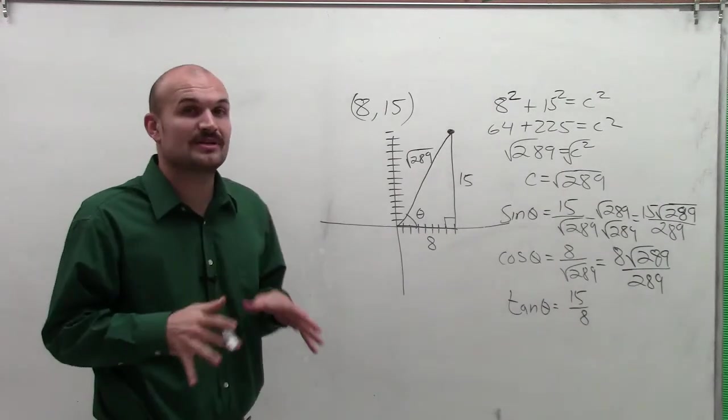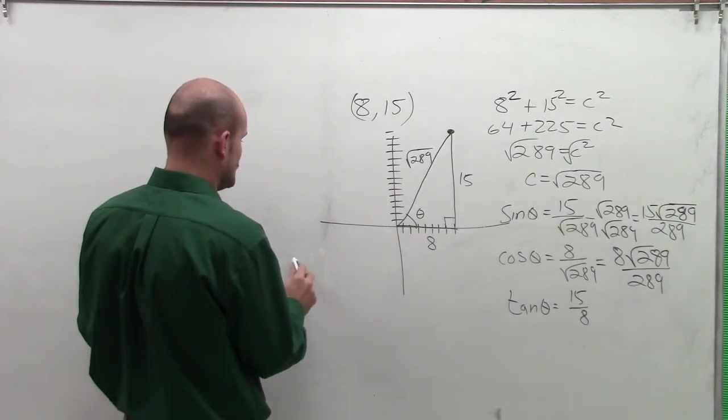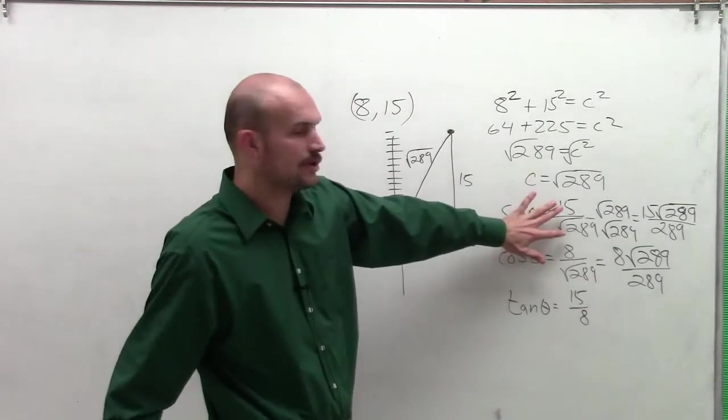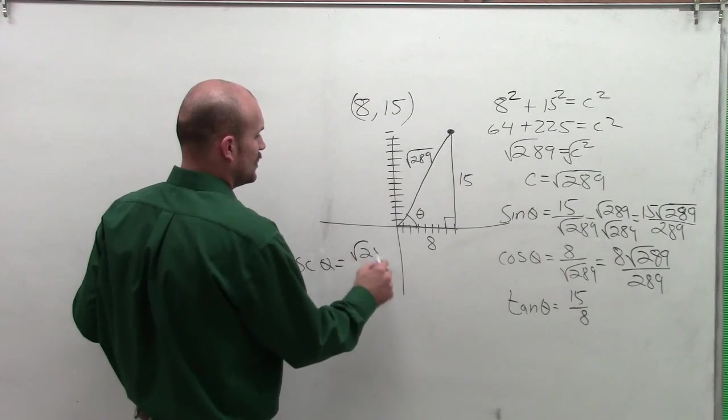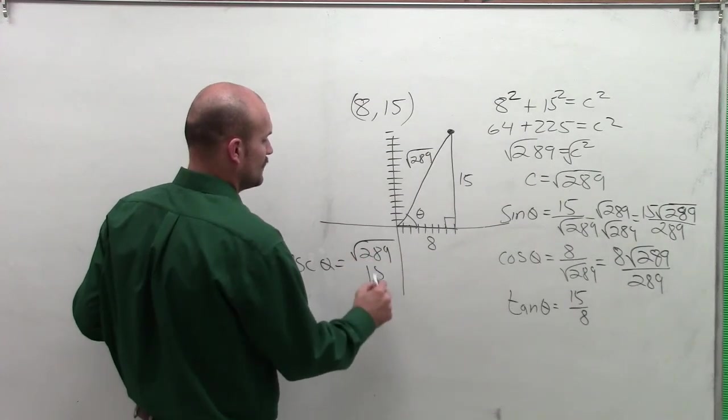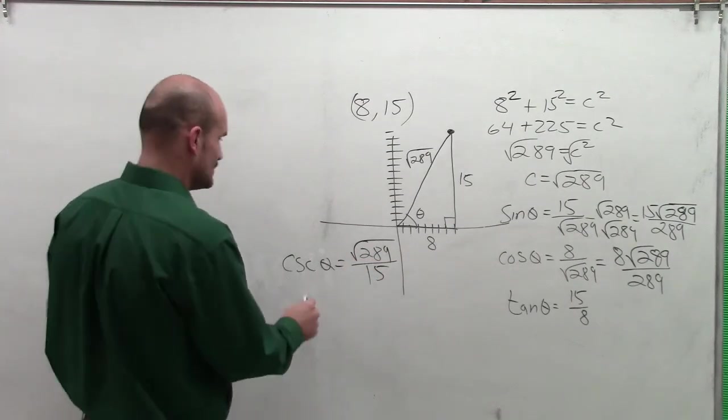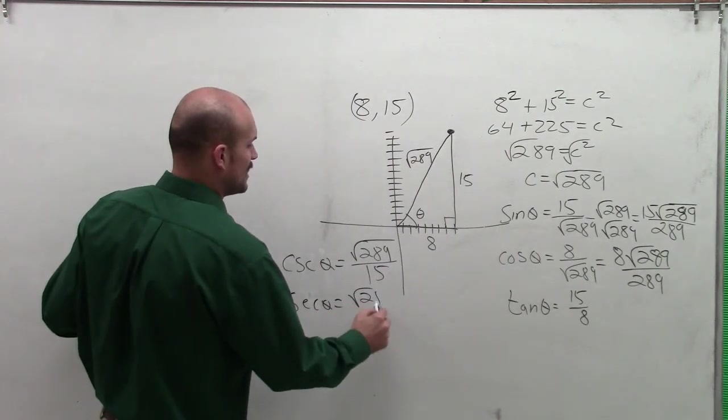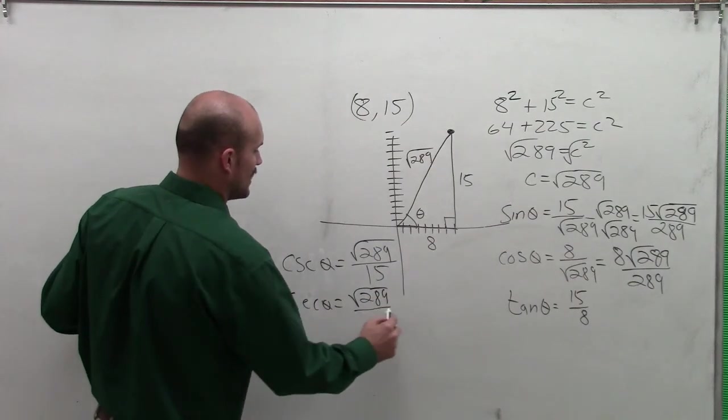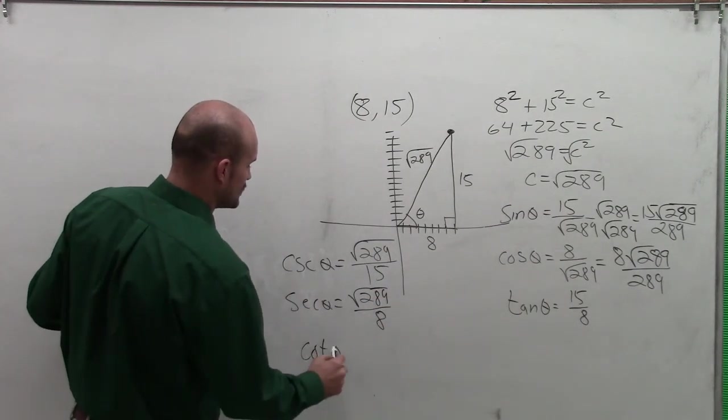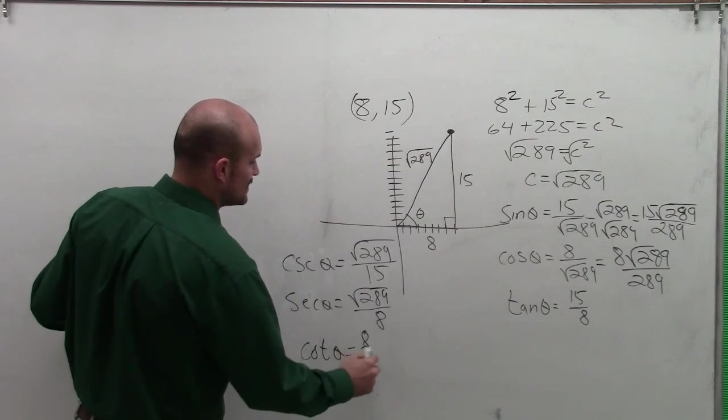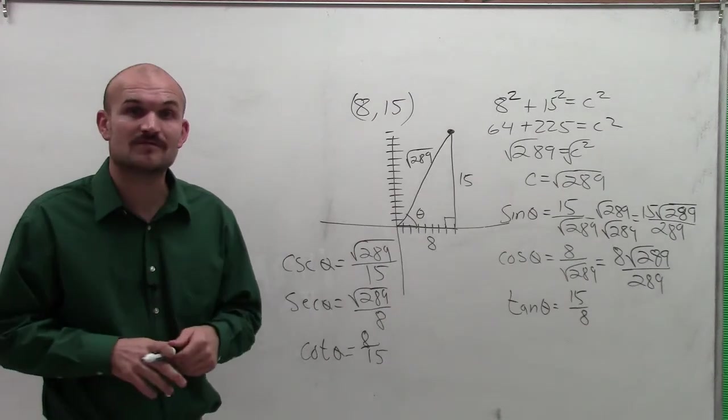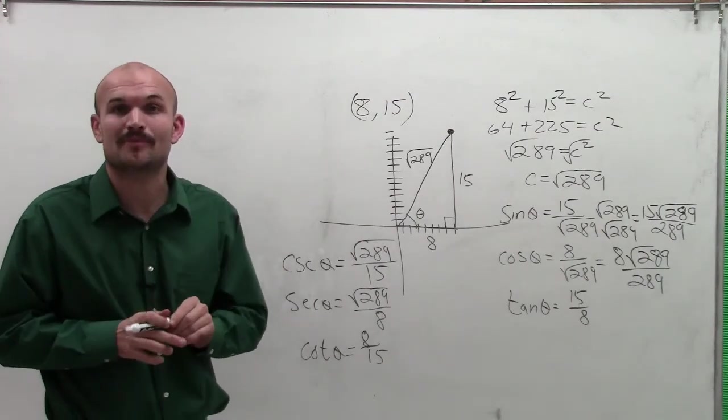Now we need to determine our reciprocal properties. The cosecant, which is the reciprocal of sine, is just going to be the square root of 289 over 15. Then the secant is the square root of 289 over 8, and the cotangent of theta is 8 over 15. So there you go, ladies and gentlemen. That's how you find your six trigonometric functions when given a random point. Thanks.